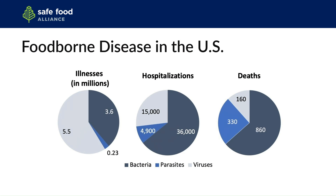This slide shows some of the data that we have on foodborne disease in the United States, both in terms of the number of millions of illnesses that we have each year, the number of hospitalizations from those illnesses, and sadly, the number of deaths. We can see that viruses comprise the majority of illnesses at 5.5 million, whereas bacteria come in second at about 3.6 million. Parasites represent a very small number. For hospitalizations, viruses account for about 15,000, but the majority of actual hospitalizations are from bacterial illnesses at 36,000. Deaths also show bacteria as the leading cause of foodborne disease deaths at 860. These are real people and real numbers, and these illnesses can seriously impact people's lives.